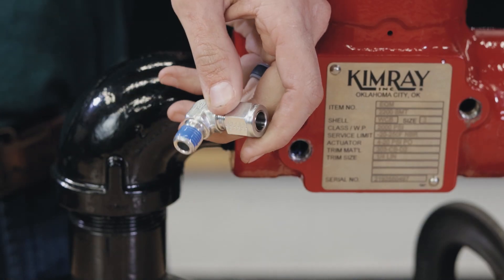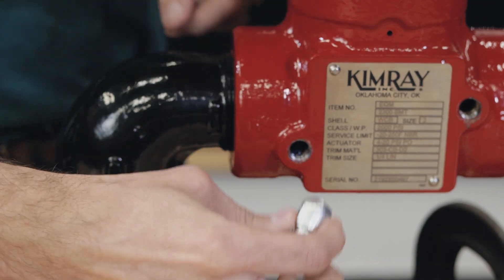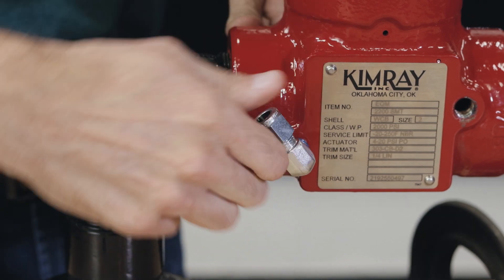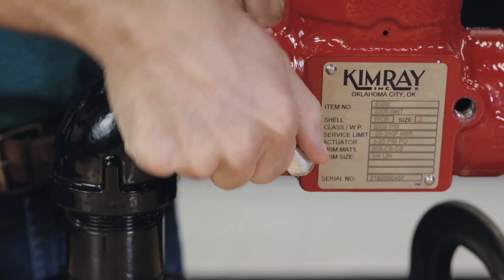For this package, we're going to start by connecting the upstream side of the valve to the sense line. Apply sealant to the connection. Since it's a 90 degree elbow fitting, we won't tighten it all the way yet.